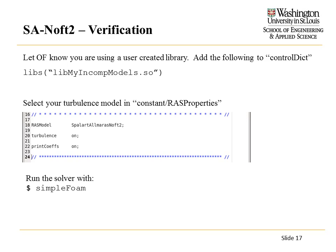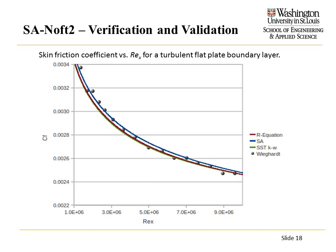Depending on what case you're running, you'll run your solver. I was running incompressible aerodynamics, so I ran SimpleFOAM. I ran it on a simple flat plate, subsonic. This is a plot of skin friction versus Reynolds number along the plate. We have our modified SA equation compared to two other turbulence models: the SST K-Omega, and the R equation, which is a turbulence model we're developing in the CFD lab. We can see our implementation was all correct and everything's working great, and we can share this library with other people in the lab.